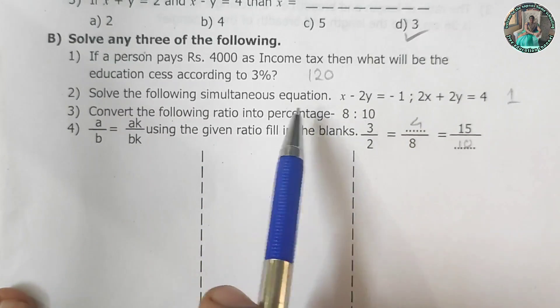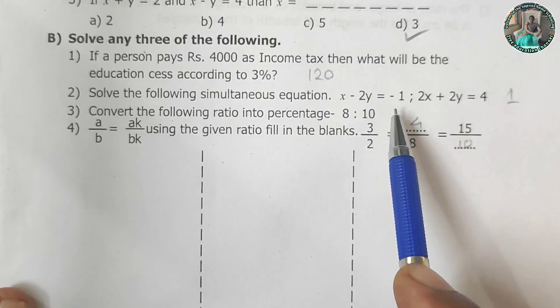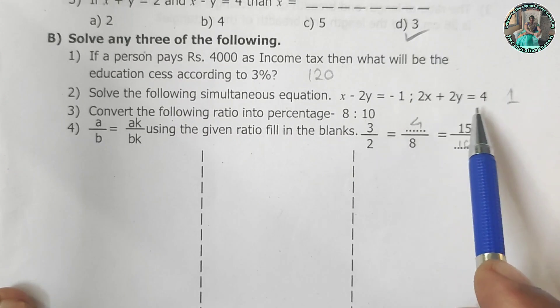Solve the following simultaneous equation. x minus 2y is equal to minus 1. 2x plus 2y is equal to 4.